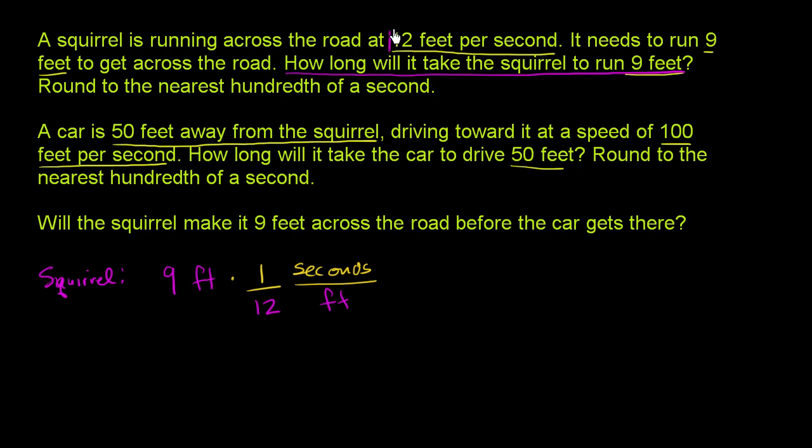Notice, all I did is I took this information right over here, 12 feet per second, and I wrote it as second per foot. 12 feet for every 1 second, 1 second for every 12 feet. What's useful about this is this will now give me the time it takes for the squirrel in seconds. So the feet cancel out with the feet, and I am left with 9 times 1/12, which is 9/12 seconds.